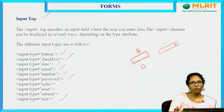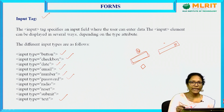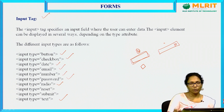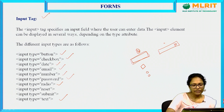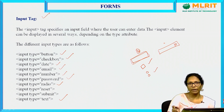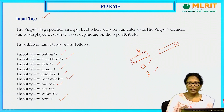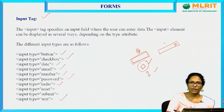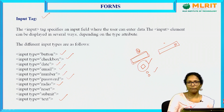Next is input type equal to password. If I use the type as password, whatever value you are entering will be invisible — it will be displayed as dots or stars. Next, input type equal to radio creates a radio button. The difference between checkbox and radio button is that with a checkbox you can select multiple options at a time, but with a radio button you can select only one option at a time. For languages a person may know multiple languages, so we use checkbox; but for gender, you use radio button.